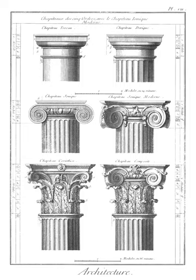Cantilever: an unsupported overhang acting as a lever, like a flagpole sticking out of the side of a wall. Capital: the topmost member of a column.